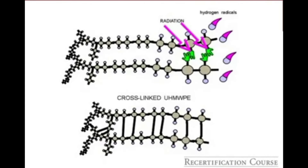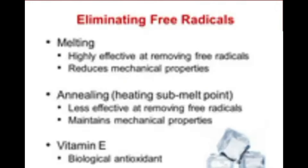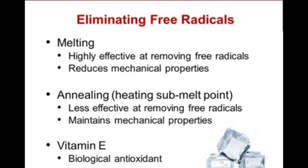Irradiation applied to polyethylene chains generates hydrogen radicals, which leads to cross-linking of the chains. Residual free radicals remain and must be dealt with to avoid oxidation. The polyethylene can subsequently be melted — a highly effective technique to remove free radicals, though it reduces mechanical properties. Annealing, which involves heating to the sub-melt point, maintains mechanical properties but is less effective at removing free radicals. Vitamin E is a biological antioxidant added by a number of manufacturers to scavenge free radicals.